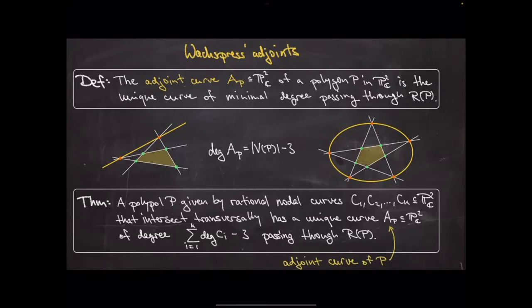This theory was more or less known by Wachspress in the 70s, but he was not an algebraic geometer so he did not give a formal proof. What we did is prove this formally: when you have a polypole with rational curves, there is a unique curve of minimal degree passing through the outside residual intersection points, and you can compute its degree. The only property you really need for this theorem is that the curves are rational — which is also the property needed for positive geometries.